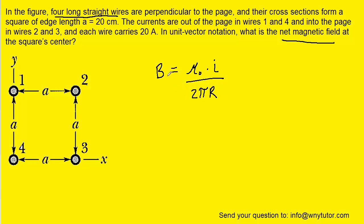According to that equation, the magnetic field produced by each wire will equal the product of a constant and current divided by 2π times a distance. Since we're being asked to calculate the net magnetic field at the center, we're going to end up using the distance from each wire to the center of the square. And of course that distance is a constant for the four wires.